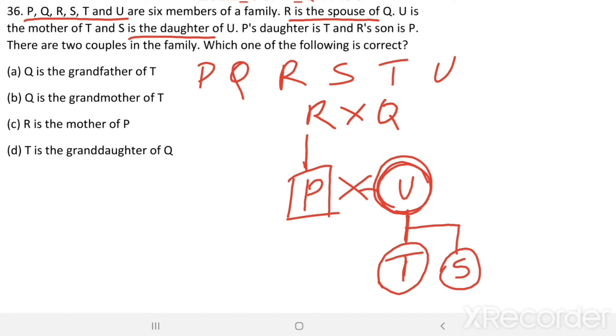Now, we got two couples in the family. And all other statements are drawn in the family tree. Now, see the first statement. Q is the grandfather of T. We don't know the gender of Q. Therefore, we cannot say Q is the grandfather of T. Q is the grandmother of T. That also, we can't say. So, we eliminate B also.